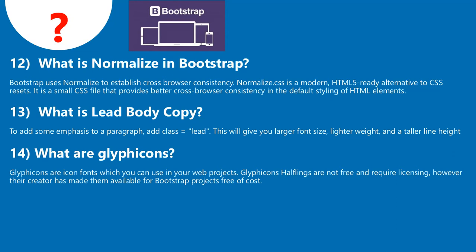Bootstrap uses normalize to establish cross-browser consistency. Normalize.css is a modern HTML5-ready alternative to CSS resets. It is a small CSS file that provides better cross-browser consistency in the default styling of HTML5 elements. Question 13: What is lead body copy? To add some emphasis to a paragraph, add class equals 'lead'. This will give you larger font size, lighter weight, and a taller line height. Question 14: What are glyph icons?